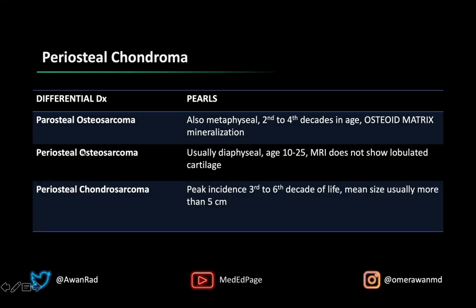Periosteal osteosarcoma is usually diaphyseal — that differentiates it from periosteal chondroma, which is metaphyseal. It occurs around ages 10 to 25, and MRI will not show a lobulated lesion producing cartilage; it's much more ill-defined with osteoid mineralization. Periosteal chondrosarcoma is the malignant counterpart to periosteal chondroma — a malignant chondroid tumor that does produce cartilage — but it occurs later in life, in the third to sixth decade, and the mean size is usually more than five centimeters, compared to 2.2 centimeters in our case. These are the key differences confirming our index case as a periosteal chondroma.